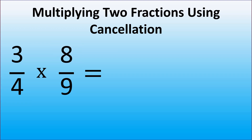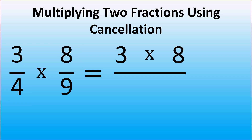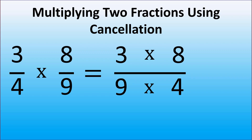When we multiply fractions, we multiply the numerator by the numerator and the denominator by the denominator. So here we have 3 times 8 in the numerator, and because 4 times 9 is the same as 9 times 4, we can rewrite the denominator as 9 times 4.